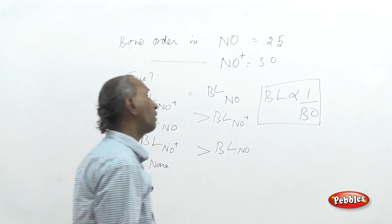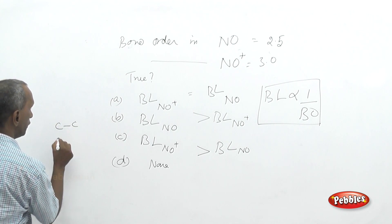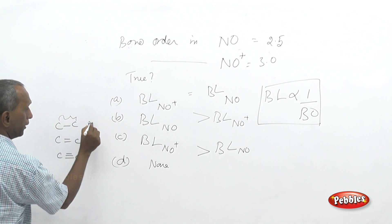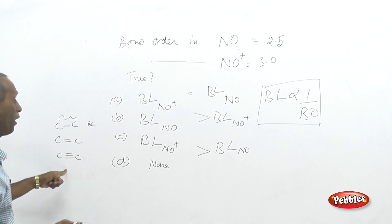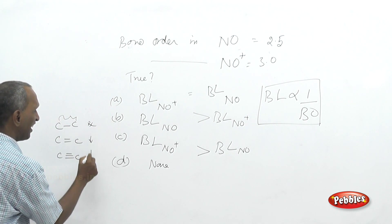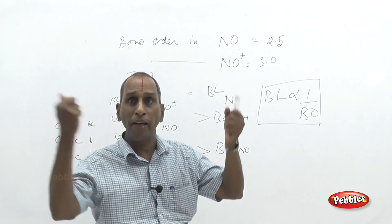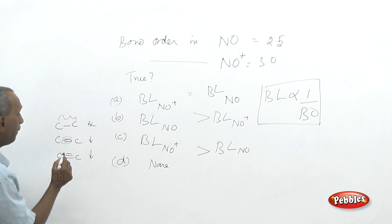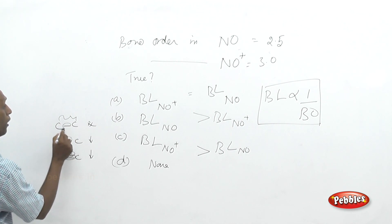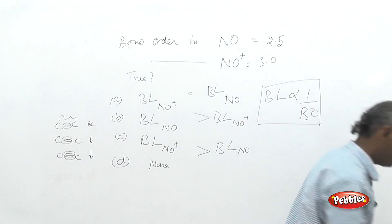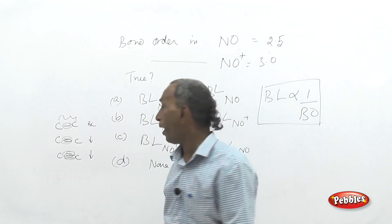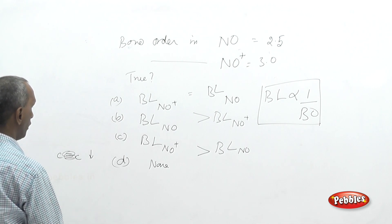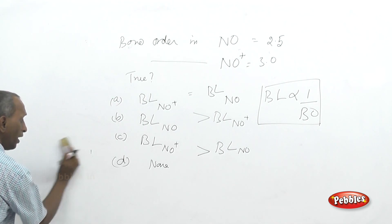Consider C single bond, C double bond, and C triple bond. The distance between carbon atoms in these cases is the bond length, while bond order is 1, 2, and 3 respectively — and bond length goes on decreasing. Multiple-bonded systems bring atoms closer together, because the same two atoms are connected by two or three covalent bonds, reducing the distance between them.